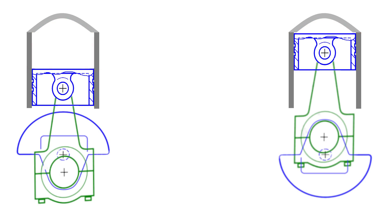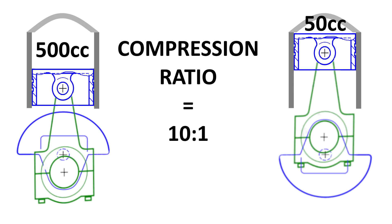If our total cylinder volume at bottom dead center is 500 cc and our combustion chamber volume is 50 cc, then our compression ratio is obviously 10 to 1. If we increase the volume of our combustion chamber by only 5 cc — just 10% — then our compression ratio becomes 9.01 to 1. As you can see, an engine's compression ratio is strongly influenced by changes in chamber volume.